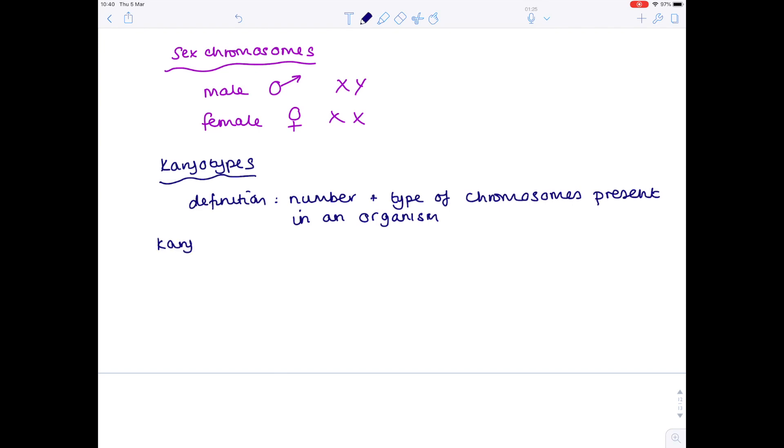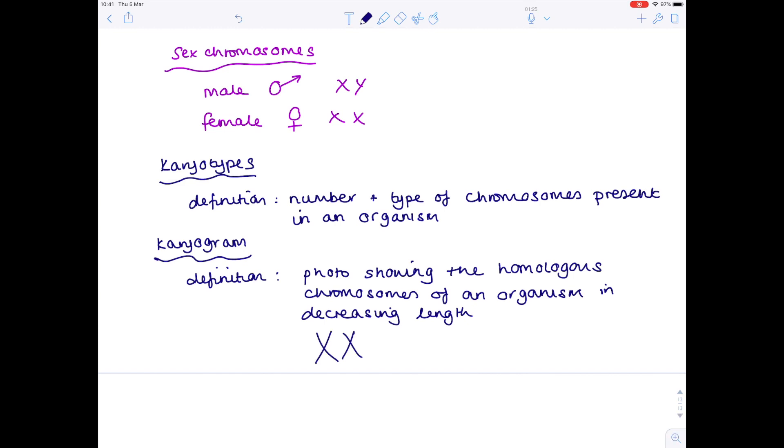A karyogram has a slightly different definition. This is a photograph in which the chromosomes of an organism are shown in pairs of decreasing length. And if we're being really specific, we'll say showing the homologous chromosomes. In terms of showing the chromosomes of an organism in decreasing length, that means we'll see the first ones look this big, and then they'll get gradually smaller and smaller.